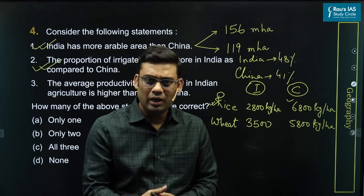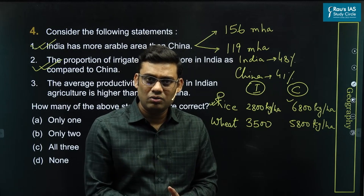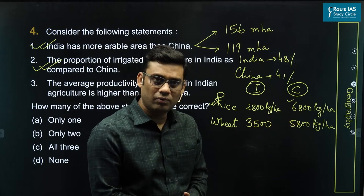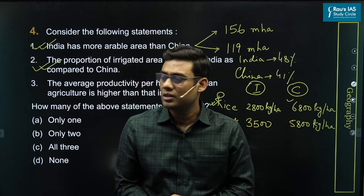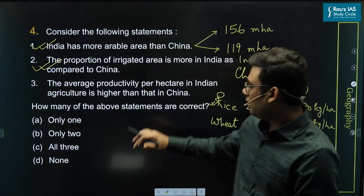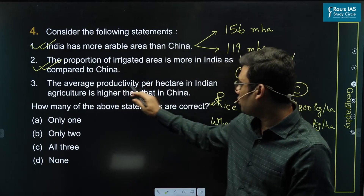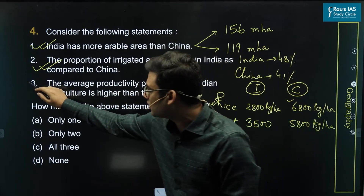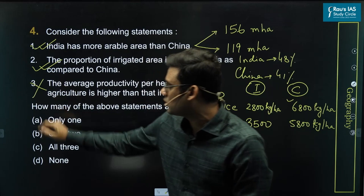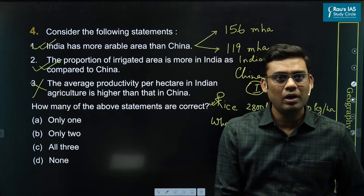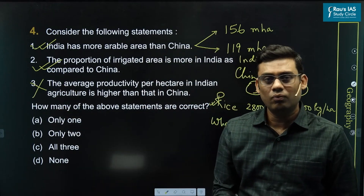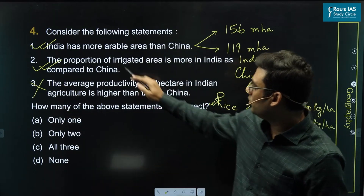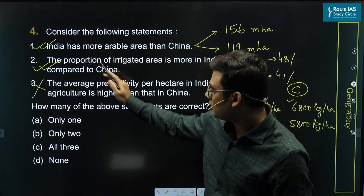Due to higher fertilizer usage, the yield is very high in China. Therefore, the statement that average productivity per hectare in Indian agriculture is higher than China is wrong. So the correct answer includes only the first and second statements.